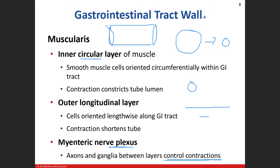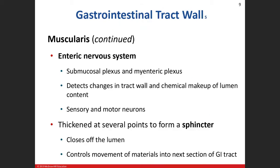When we talk about the enteric nervous system, think of it as a local nervous system just for the digestive system — the GI tract. We have two types of plexuses: the submucosal plexus and the myenteric plexus.